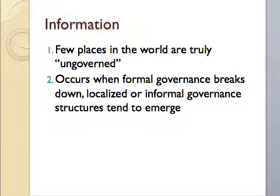A few places in the world are truly ungoverned. An ungoverned area occurs when formal governance breaks down; localized or informal governance structures tend to emerge. Basically, it's when the government can't control the people, thus causing corruption in the country or in a certain area.